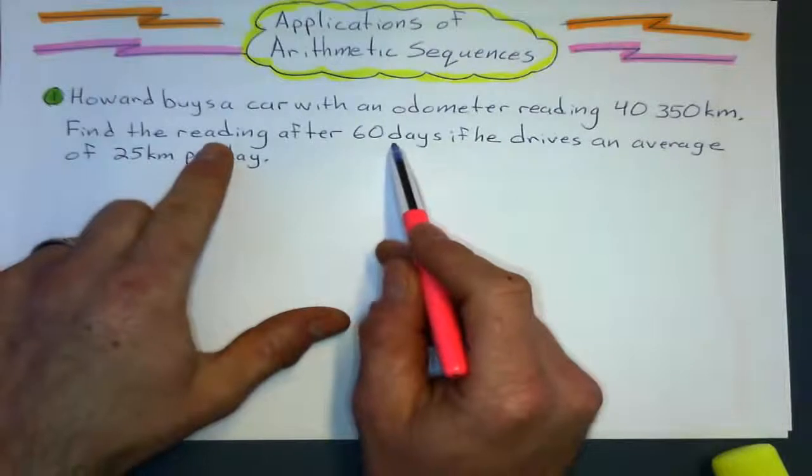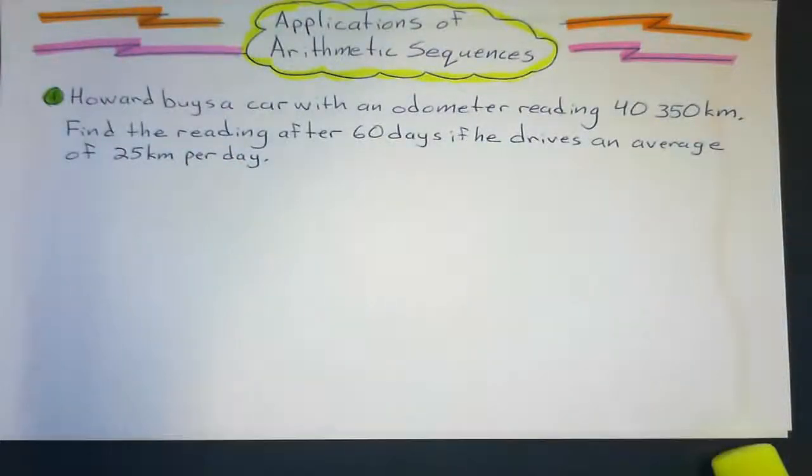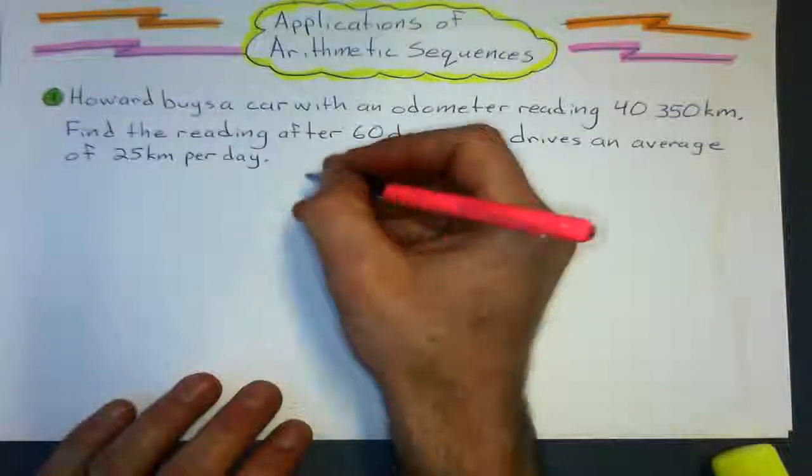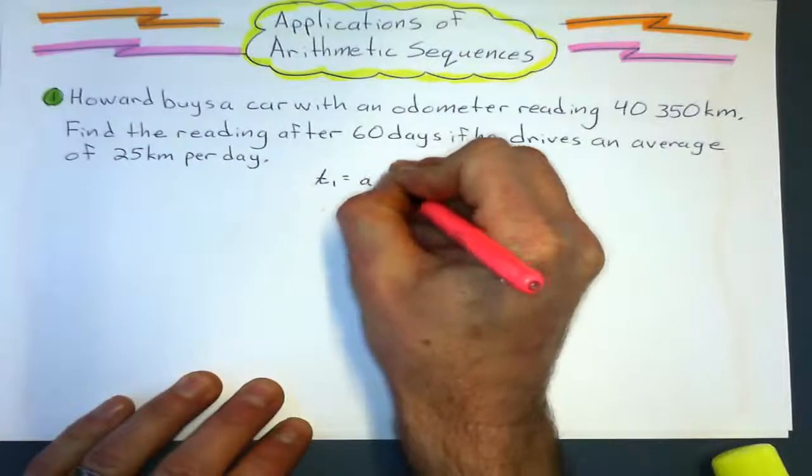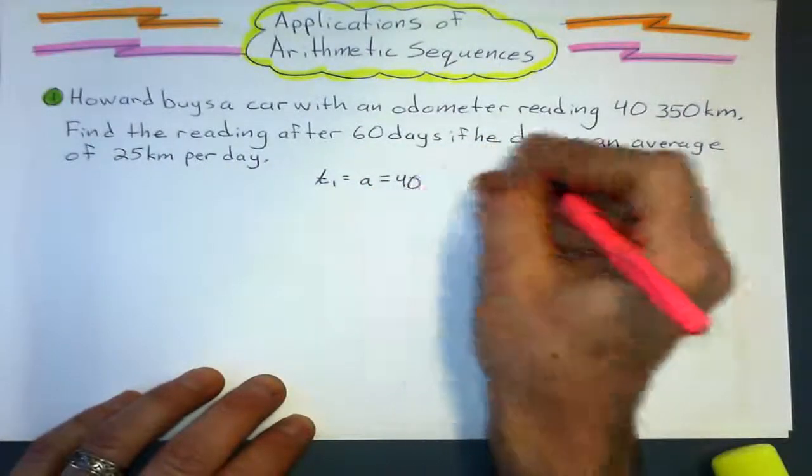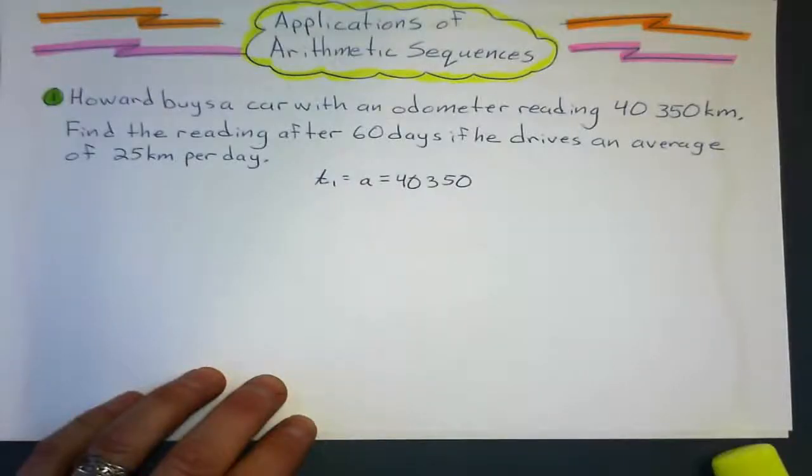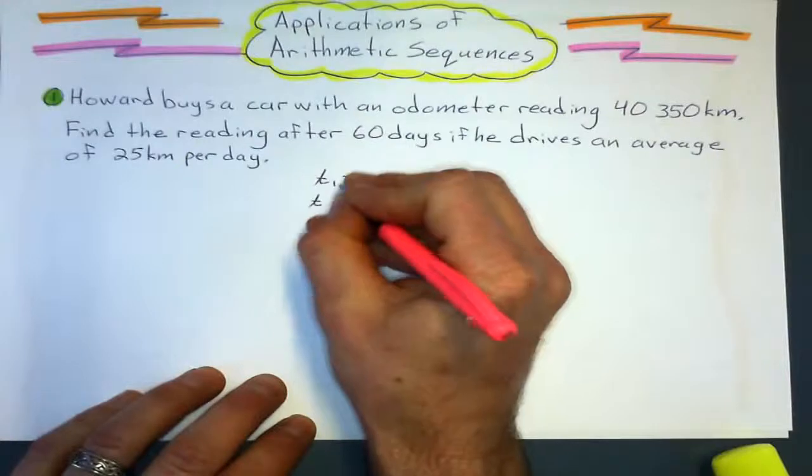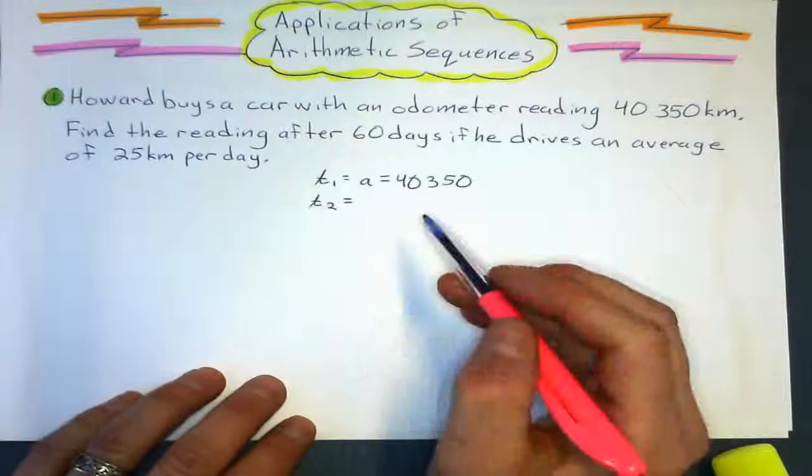Well, find the reading after 60 days. That means we know the first term of the sequence is going to be 40,350. And we know that each day he drives about 25K.